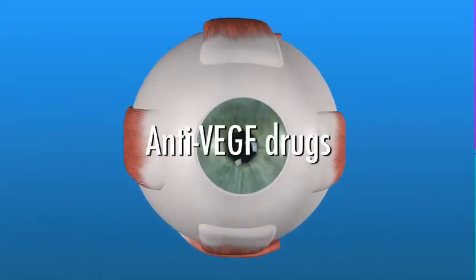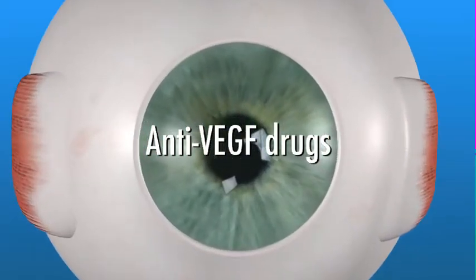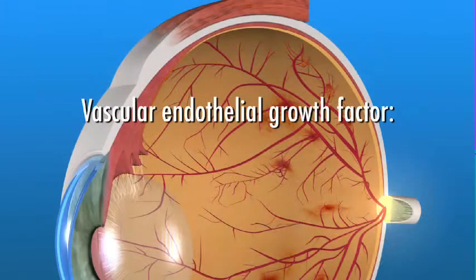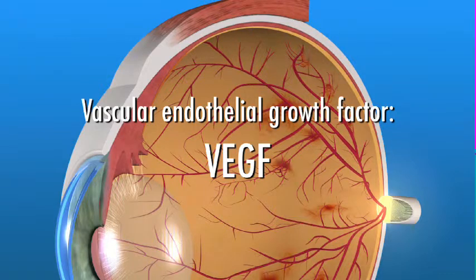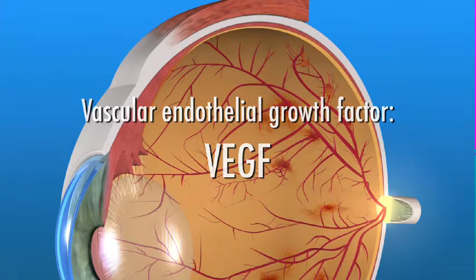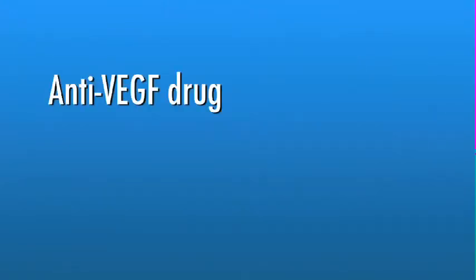Despite having laser surgery, some people with PDR may still develop further problems. Your doctor may recommend treating your PDR with what is called an anti-VEGF drug. Anti-VEGF drugs target a specific chemical in your eye. This chemical, called vascular endothelial growth factor, or VEGF, is critical in causing abnormal blood vessel growth on the surface of the retina as well as in other parts of the eye. Several drugs have been developed that can block the trouble-causing VEGF.